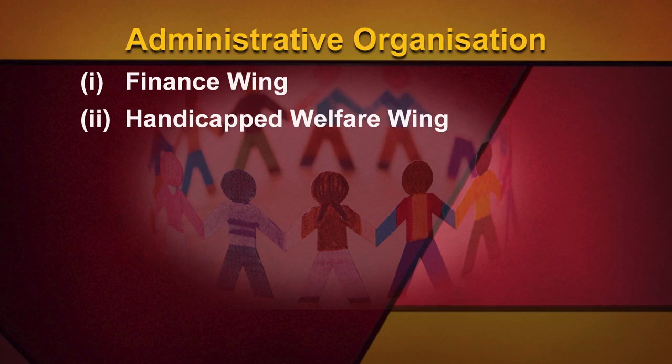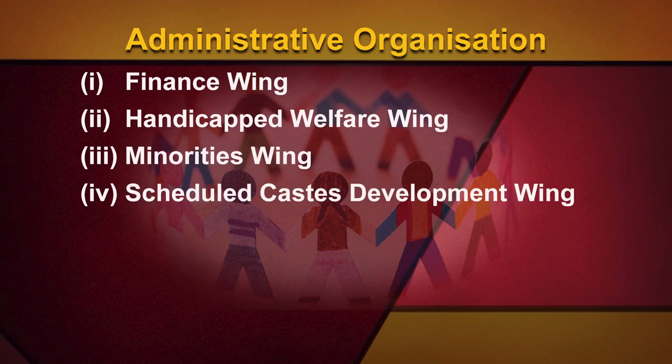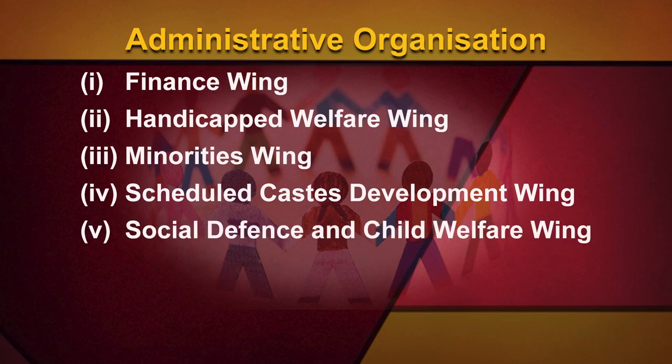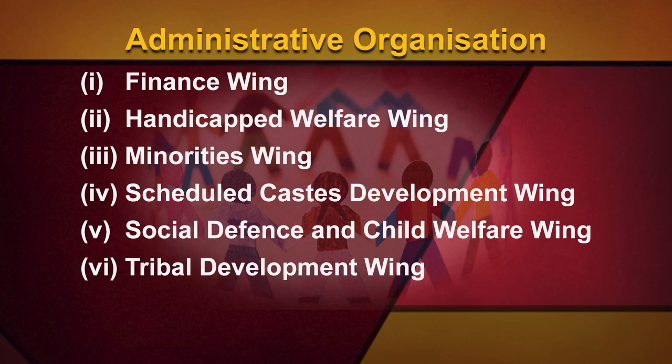The broad divisions of these wings are: 1. The Finance Wing, 2. Handicapped Welfare Wing, 3. Minorities Wing, 4. Scheduled Caste Development Wing, 5. Social Defence and Child Welfare Wing, 6. Tribal Development Wing, 7. Walk Wing. The Ministry has a Consultative Committee of Members of Parliament which reviews matters relating to the Ministry and advises on matters relating to general welfare as well as that of sectoral groups.